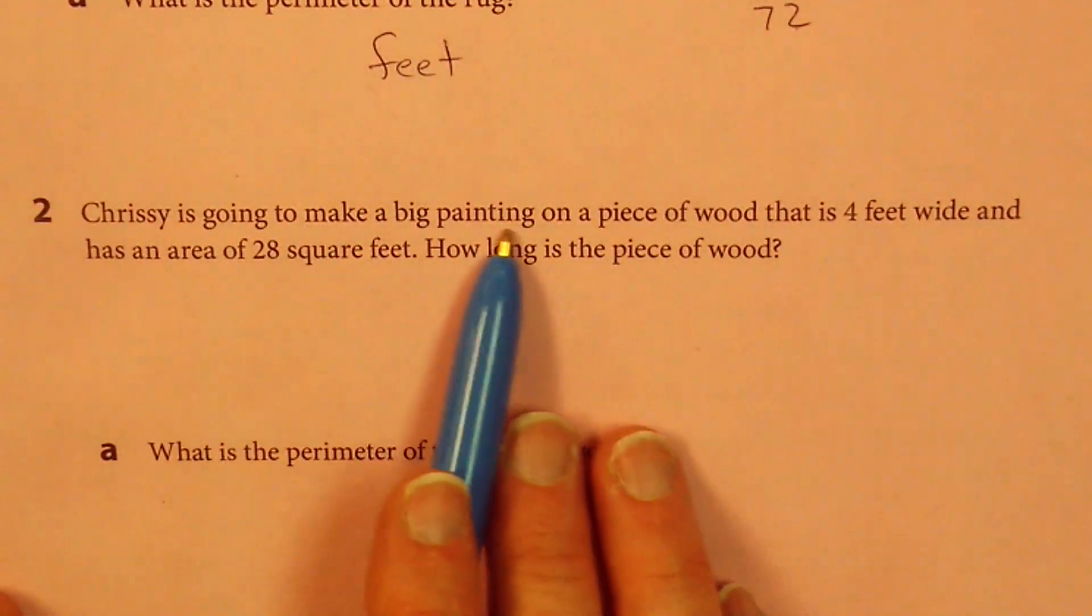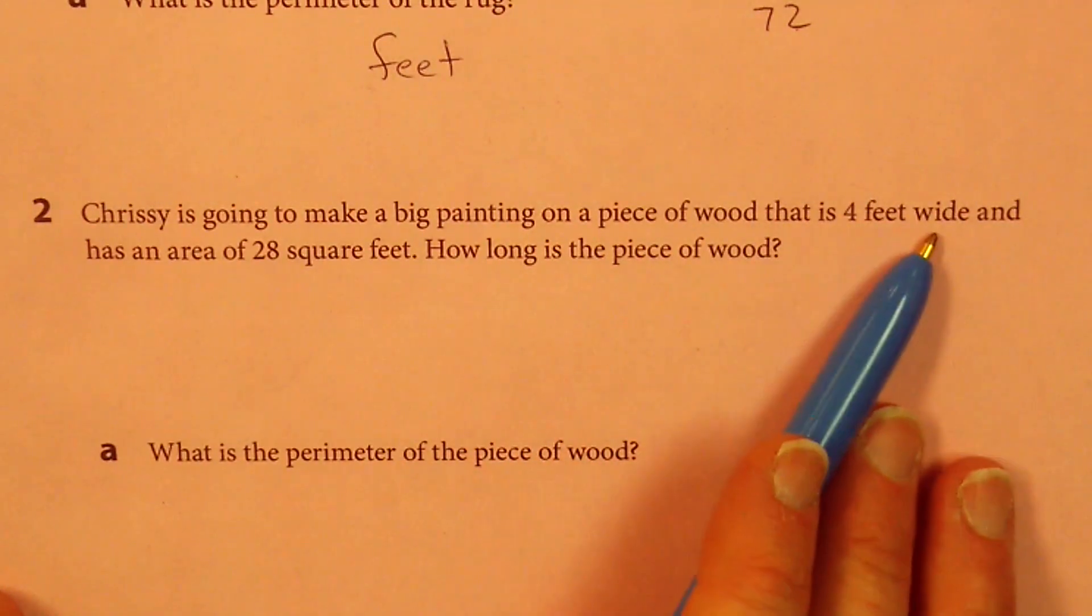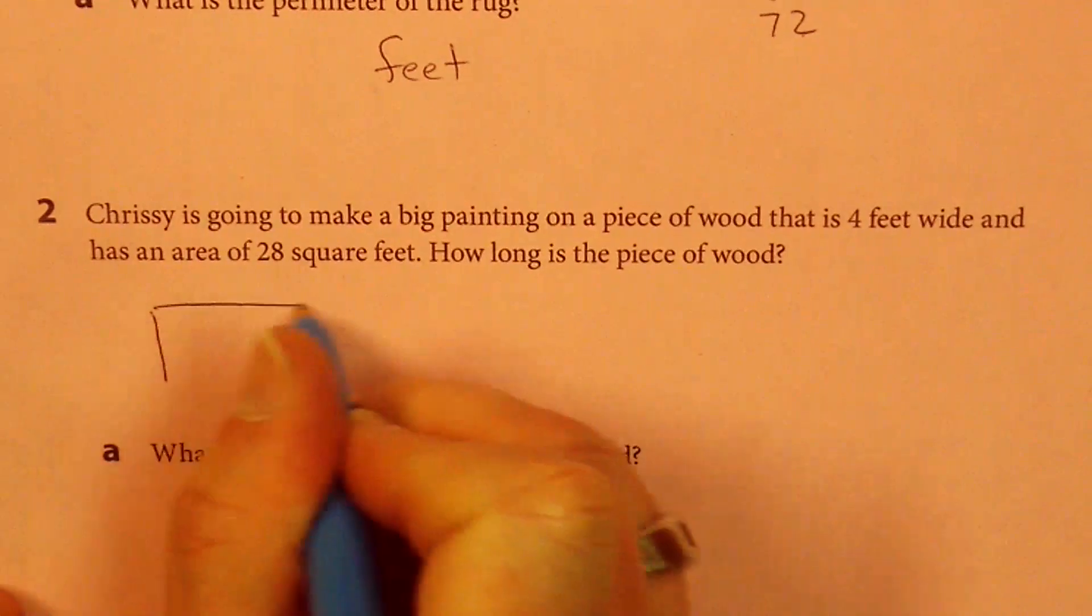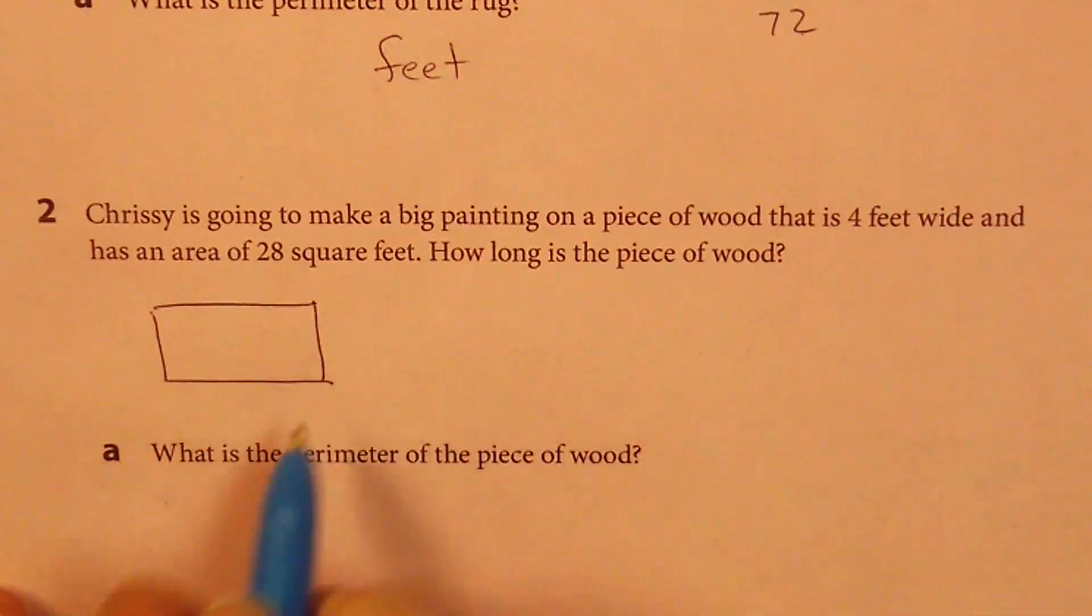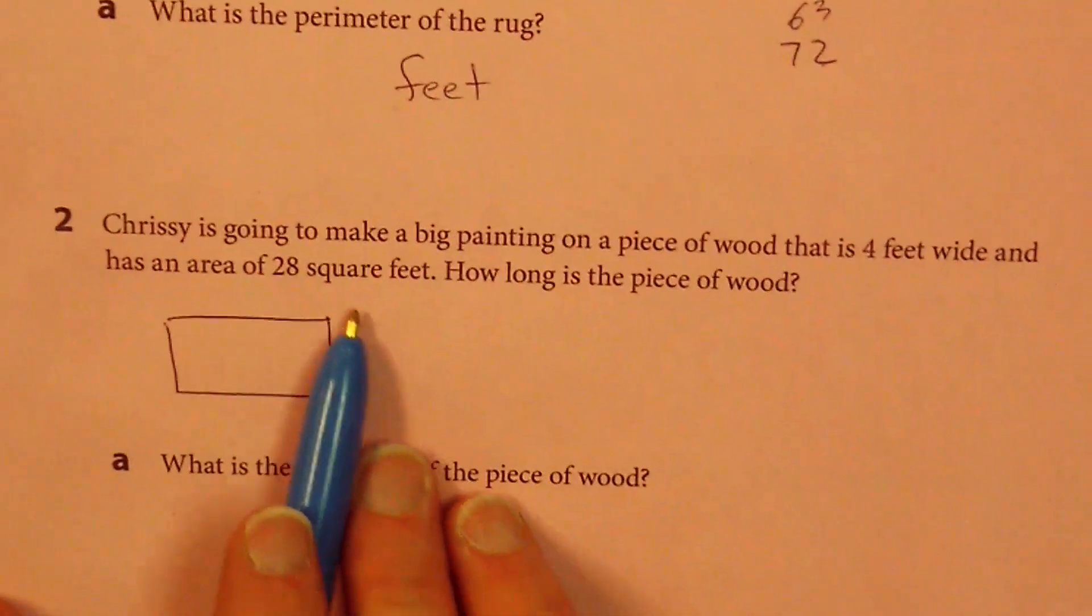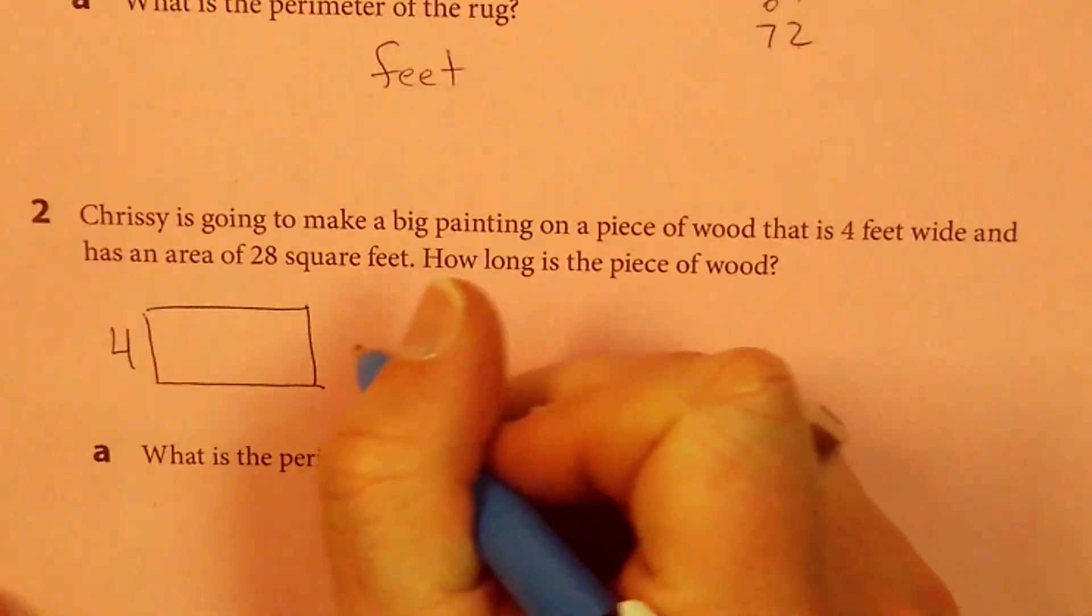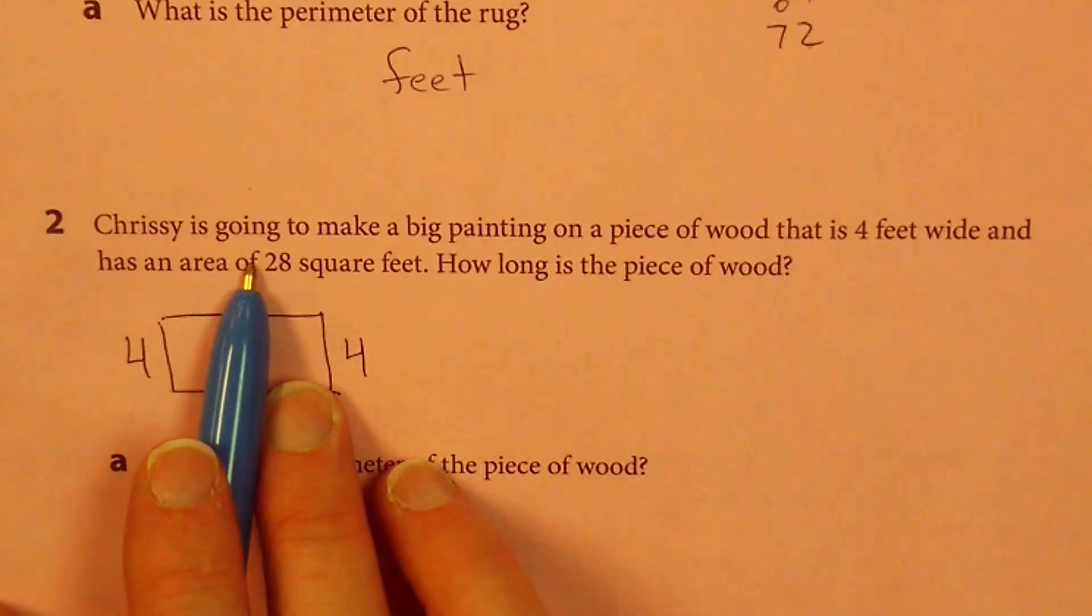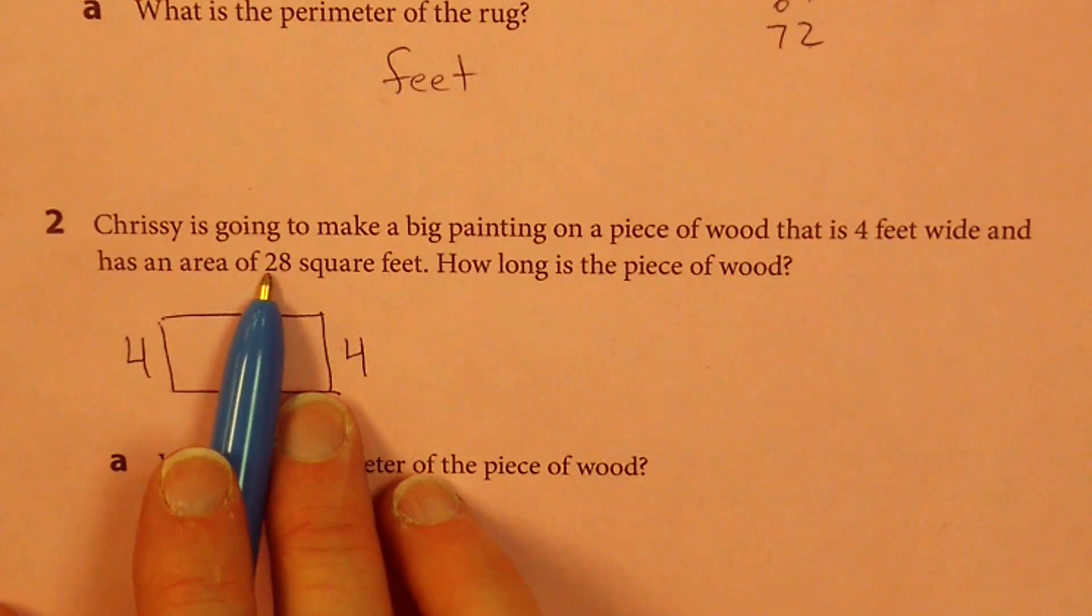Chrissy is going to make a big painting on a piece of wood that is four feet wide and has an area of 28 square feet. So here's my piece of wood. Isn't it so funny? It kind of looks a lot like my rug. And it said that it's four feet wide. So there's my rectangular piece of wood. It's four feet wide. It has an area of 28 square feet.